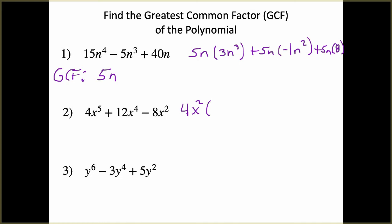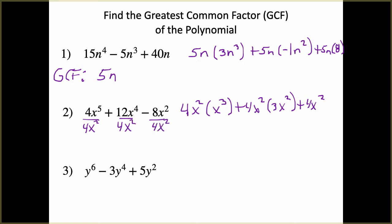If we divide 4x² out of 4x⁵: 4 divided by 4 is 1, and x⁵ divided by x² is x³. For the middle term, dividing 12 by 4 gives 3, and x⁴ over x² is x². For the last term, you can write it as −8x² over 4x²: negative 8 over 4 is −2, and x² over x² is 1. So we're left with −2. The GCF for this one is 4x².